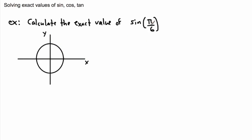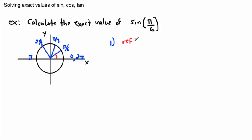Let's find the exact value for sine of π over 6. Step one is always to draw it. This is 0 and 2π, this is π. Counting by thirds: π over 3 is a third of π, and π over 6 is half of that — so my angle finishes right here. My reference angle is π over 6, measured from the x-axis.